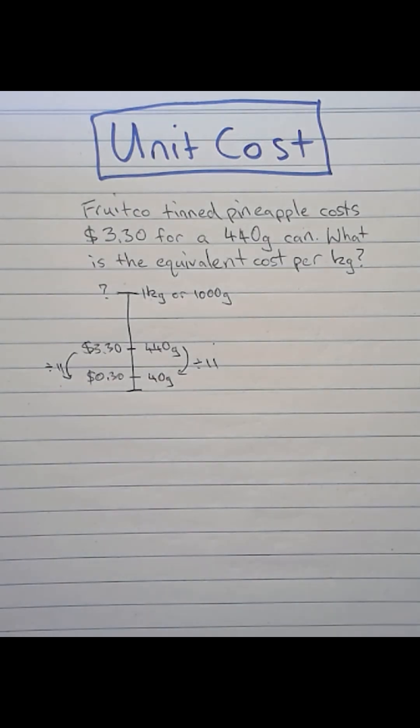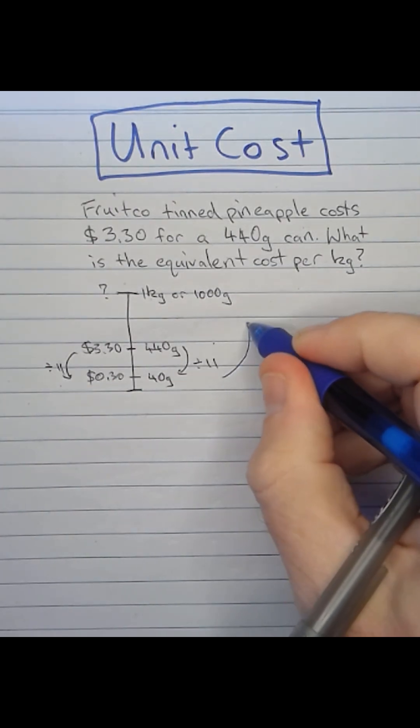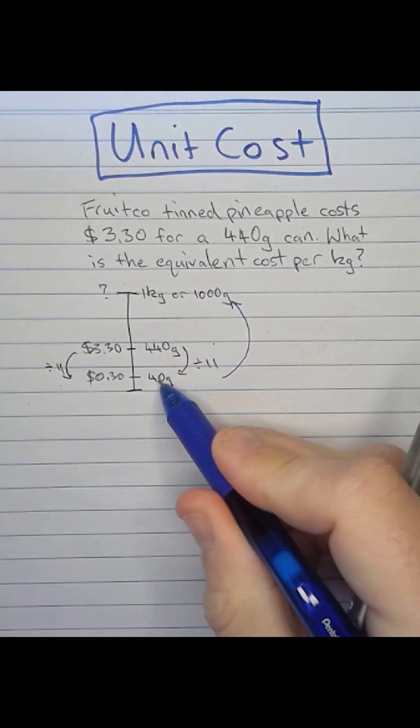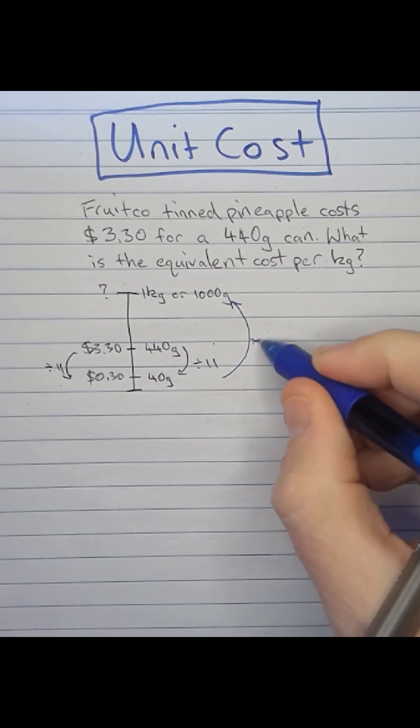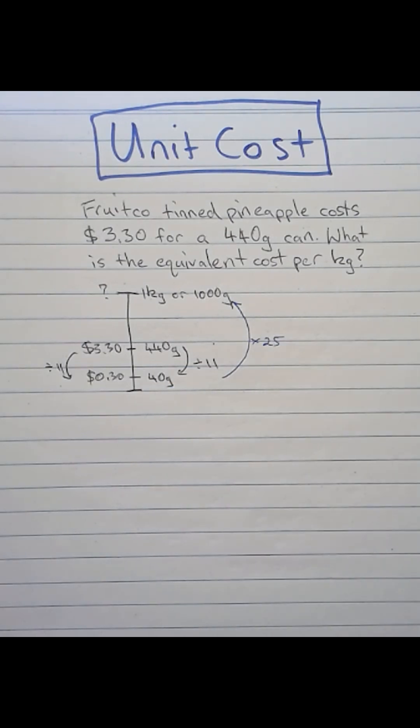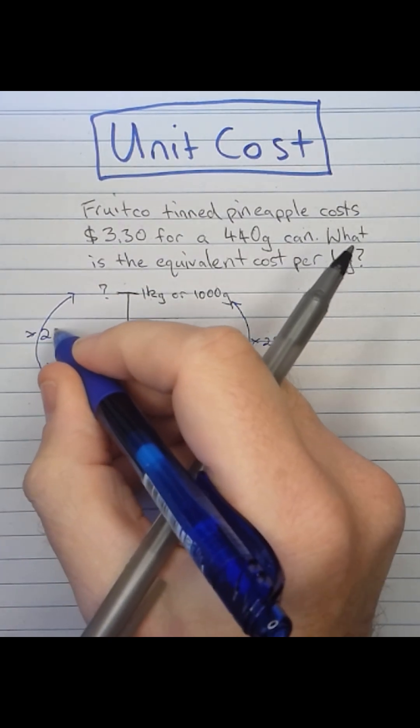Next up I need to get all the way back up here to 1000 grams so 40 multiplied by 25, and again proportional relationship so to get my cost for 1000 grams I'm going to need to multiply by 25 on that side as well.